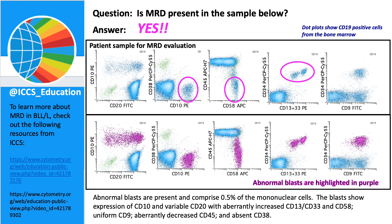In this particular case, the abnormal blasts comprised 0.5% of the mononuclear cells. They expressed CD10 with variable CD20. They had abnormally increased CD13/CD33. The level of CD58 was quite high on this blast population. These blasts had uniform CD9, and they had aberrantly decreased CD45 without any expression of CD38. This is a very abnormal blast population with multiple abnormalities present at 0.5% of mononuclear cells, and unfortunately we have identified minimal residual disease which will have prognostic implications for this patient.